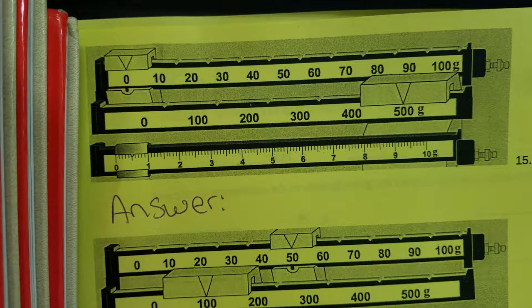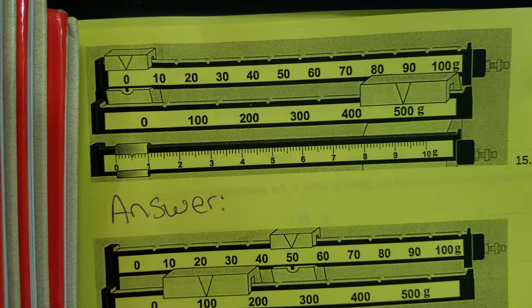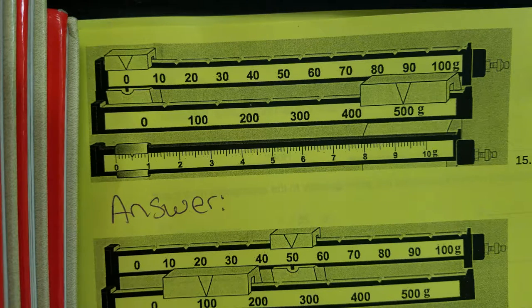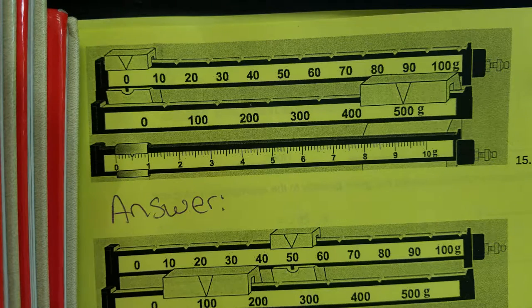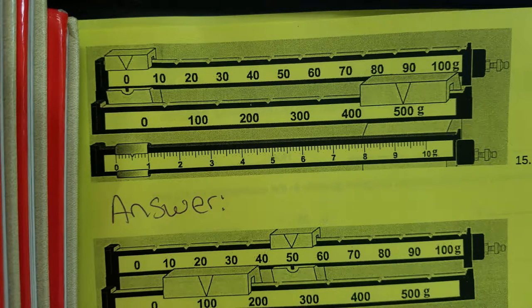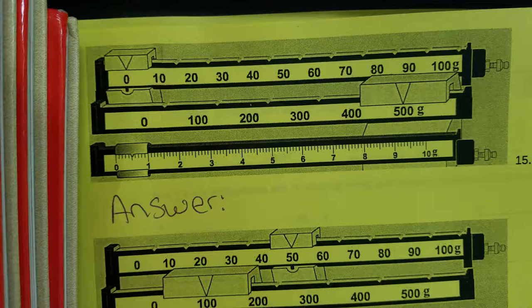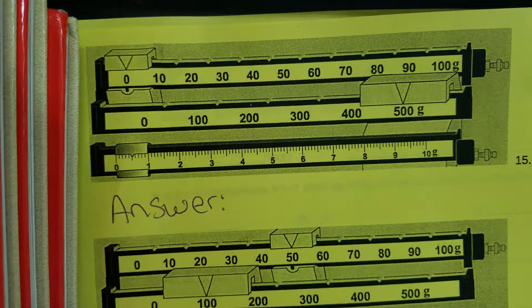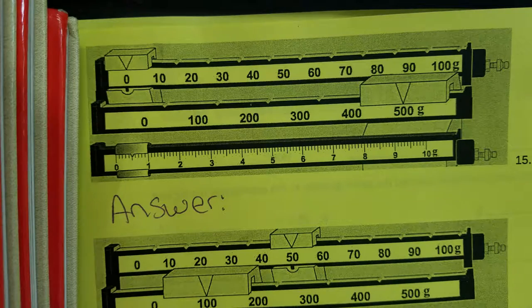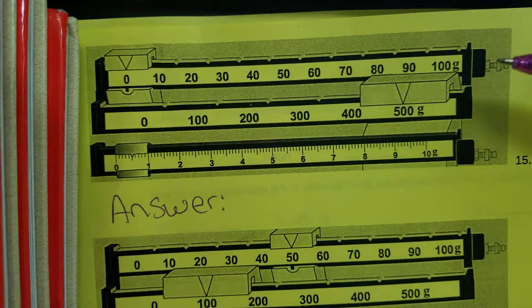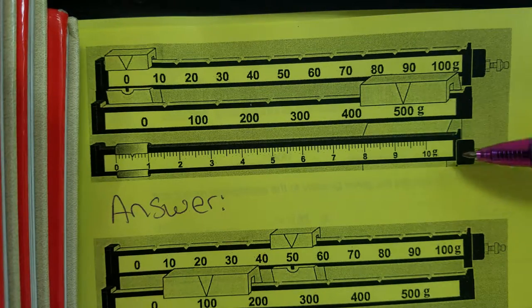Hello, Earth Science class. Today we're going to go over how to read a triple beam balance. Some of you in our soccer lab got to read our double beam balances, others use the electronic scales. So we're going to take a second just to go over how to read a balance when it has one, two, three beams.